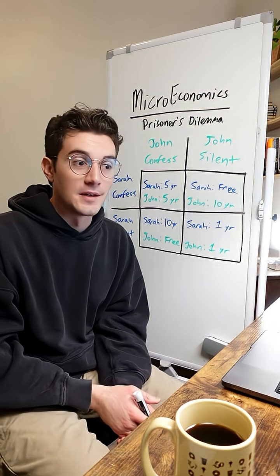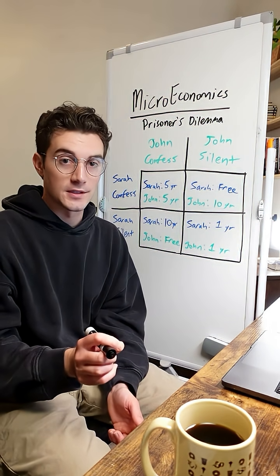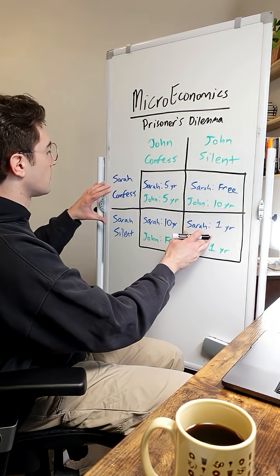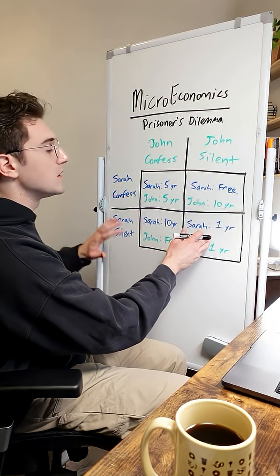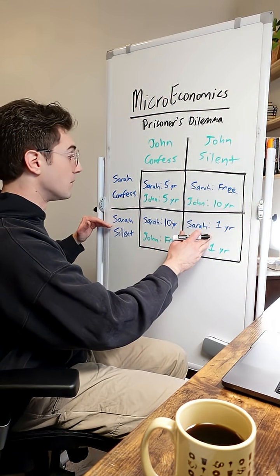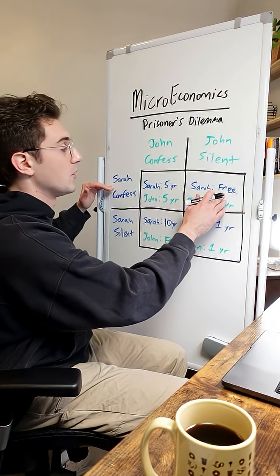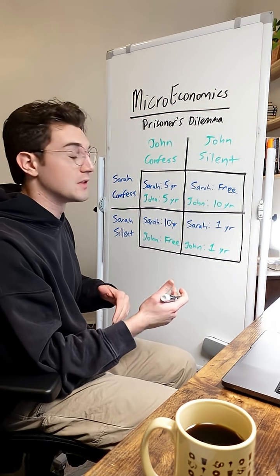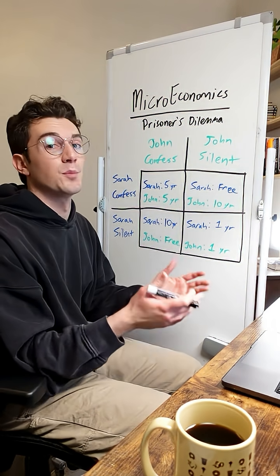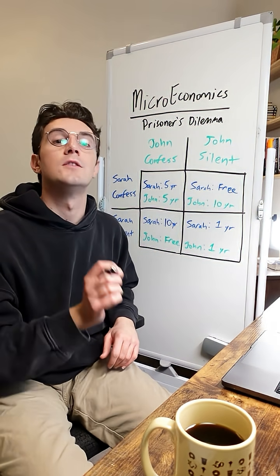But the prisoner's dilemma says that people are going to act in their own self-interest. Let's zone in on Sarah first — only look at the blue values here. Sarah is currently staying silent in this cell, but she's going to be enticed to confess and go free. That's her own self-interest getting in the way of the outcome that's best for both of them. So Sarah is going to be enticed to confess.